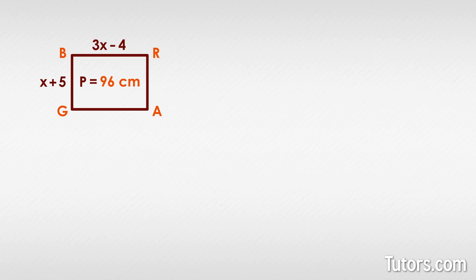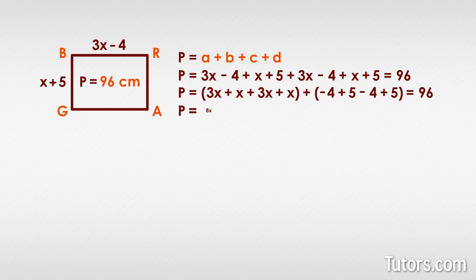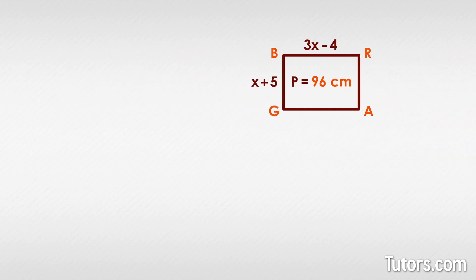You can still use both formulas, but you must simplify along the way. Combine like terms, subtract 2 from both sides, and divide. Using our first formula, it looks like this. Now, let's try our second formula.